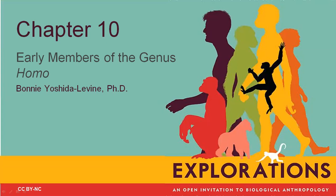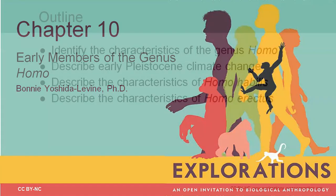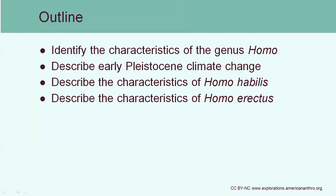Welcome back to Physical Anthropology. Today we're going to be looking at Chapter 10, the early members of the genus Homo. First, we'll identify characteristics that make the genus Homo unique compared to their predecessors, the Australopithecines. We'll talk a little bit about climate change and how this contributed to human evolution. And then we'll look at two specific species, Homo habilis and Homo erectus.